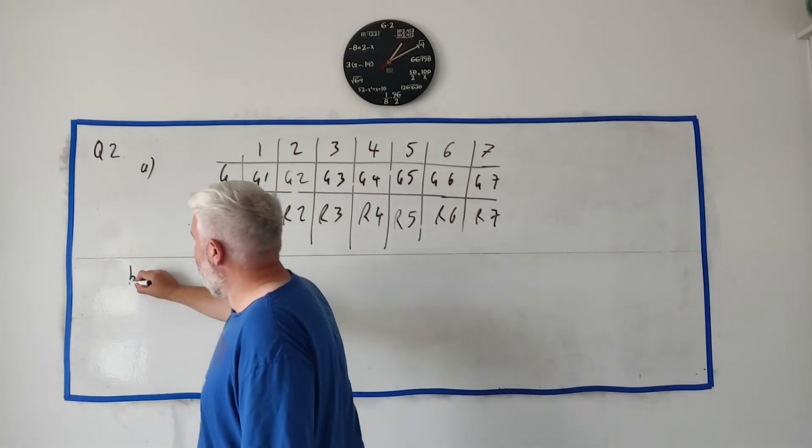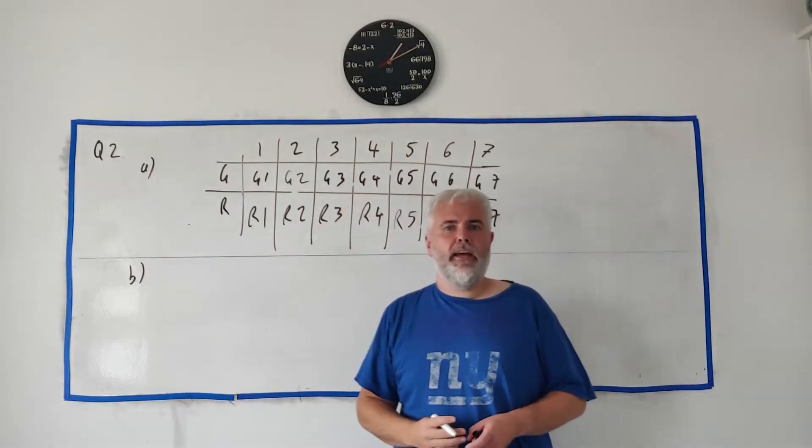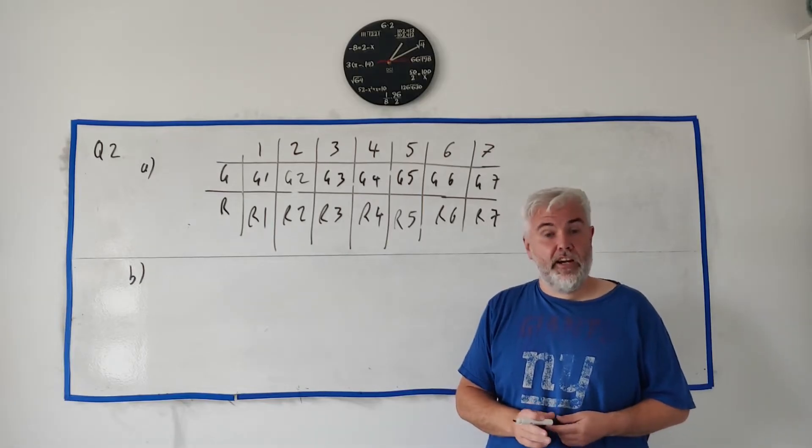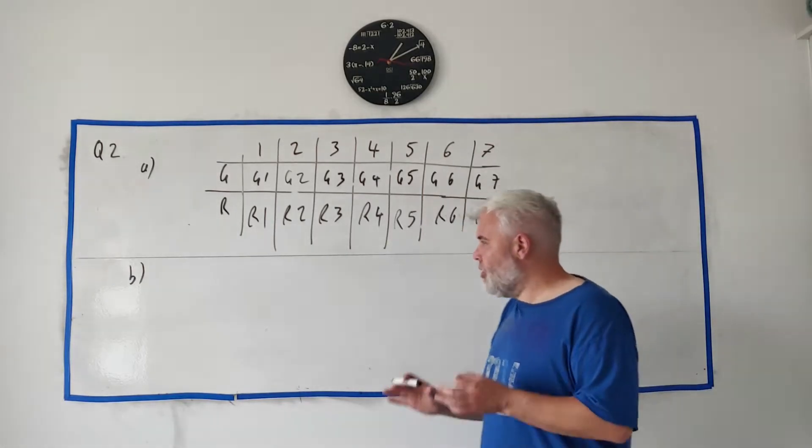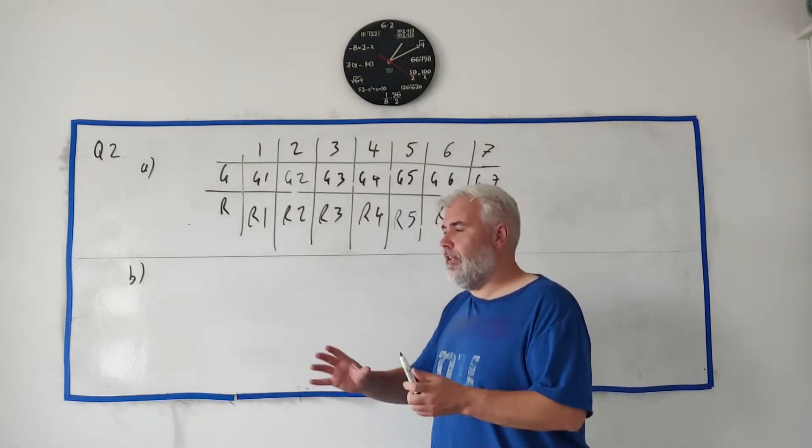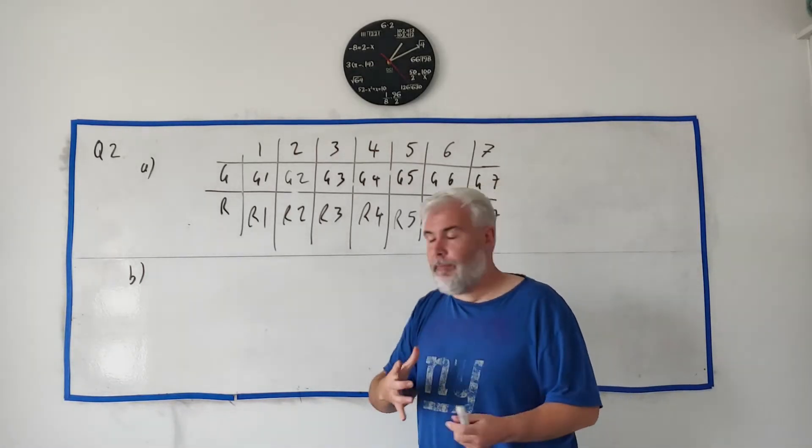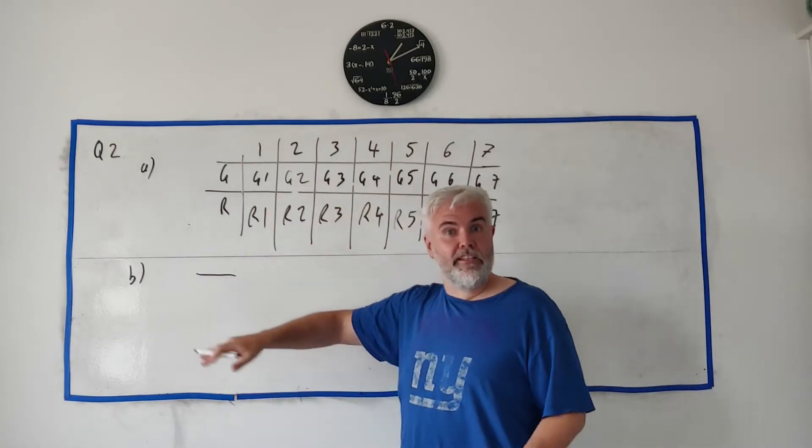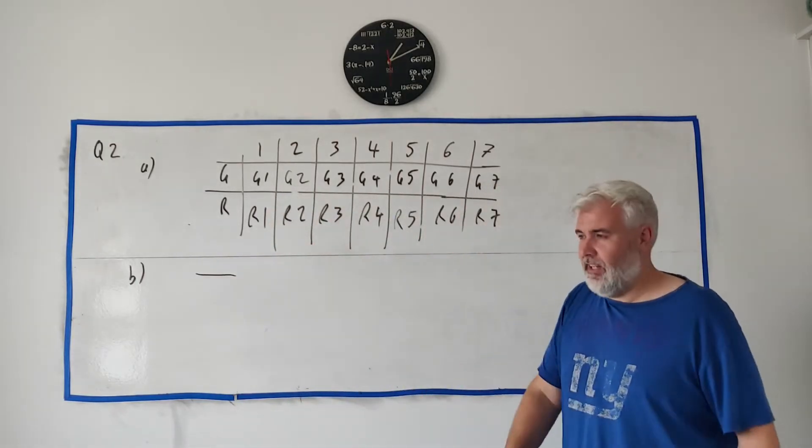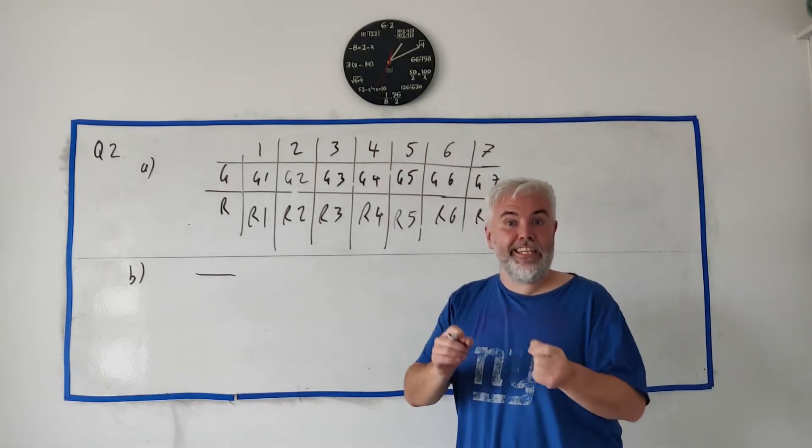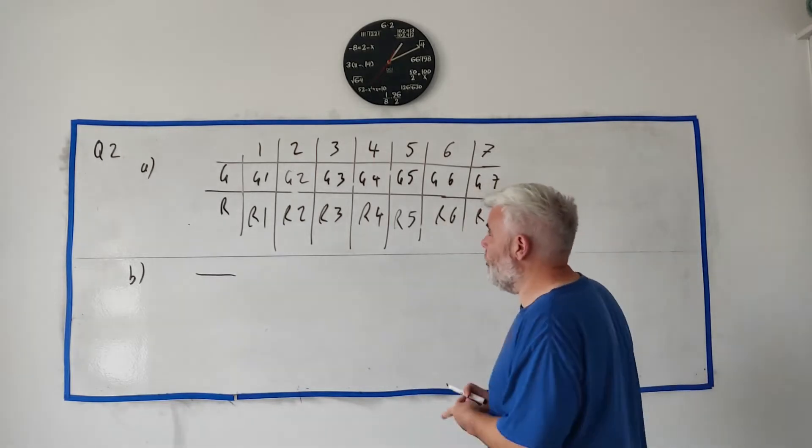For part B, they ask: a card is chosen at random, work out the probability of getting a card with an even number. So how do we do probabilities? It's simply how many things that they describe happening divided by the total number of things that can happen—that's at least a simple way I like to think of it. They asked the probability of finding an even number on a card.